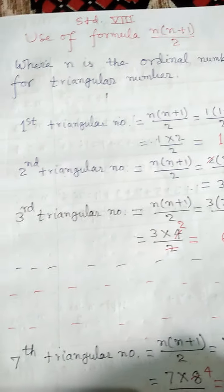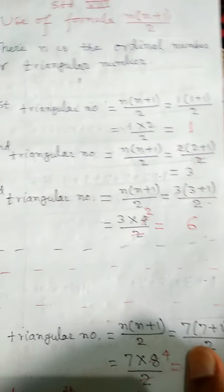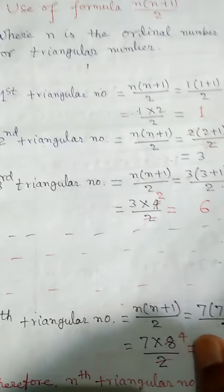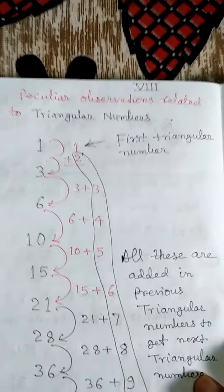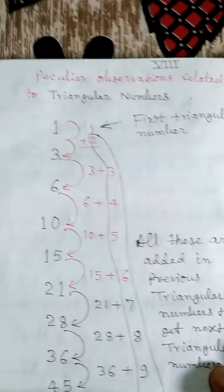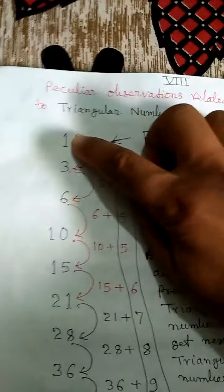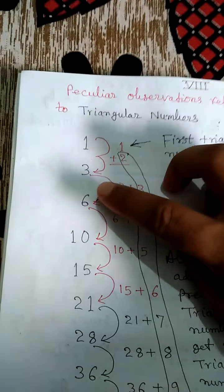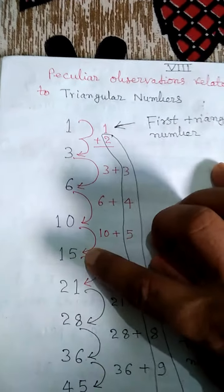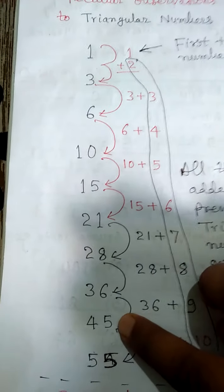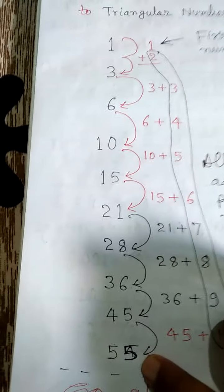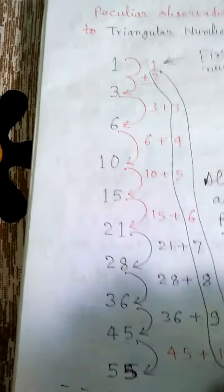Triangular numbers are those whose dot patterns can be arranged as a triangle. Now let's observe some peculiar observations related to triangular numbers. Here, 1, 3, 6, 10, 15, 21, 28, 36, 45, 55 — all these are triangular numbers.